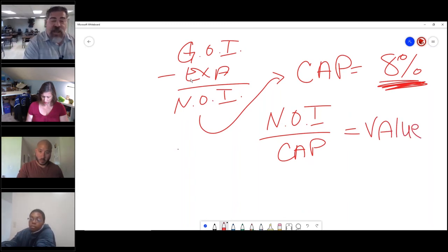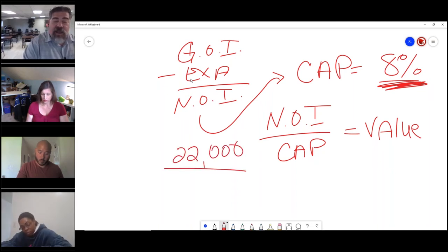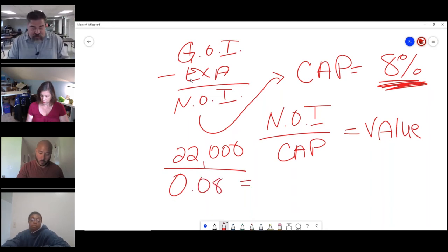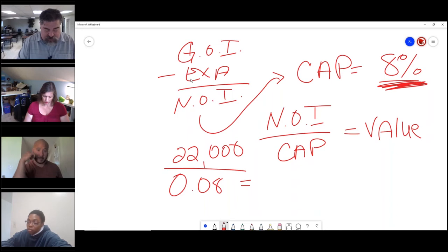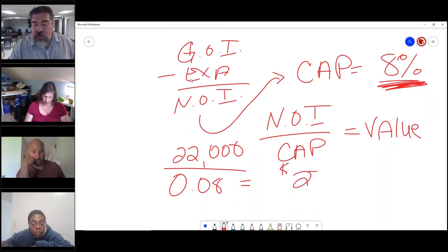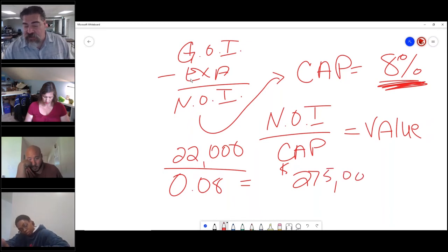So if I told you it had a $22,000 NOI and the cap rate's 0.08, you could then figure the value of this property. $22,000 divided by 0.08 is $275,000.